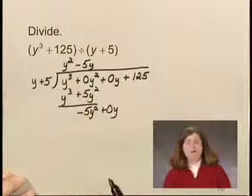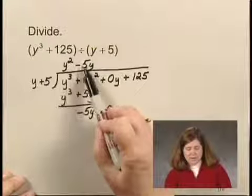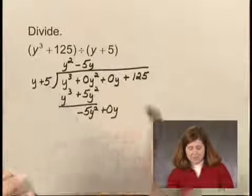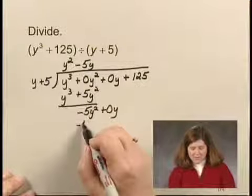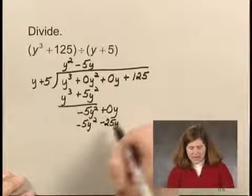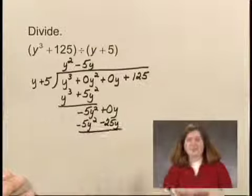I write that in my quotient, and then I multiply negative 5y times the divisor y plus 5. That gives me negative 5y squared minus 25y. And I subtract again.